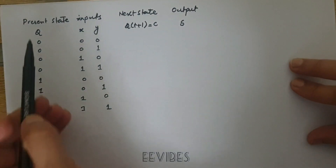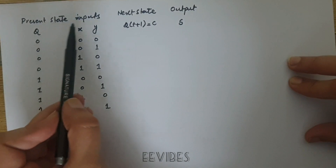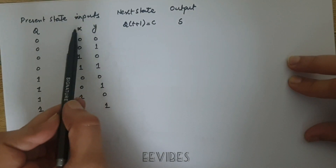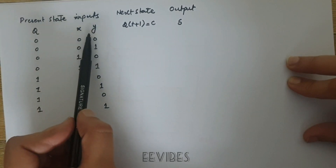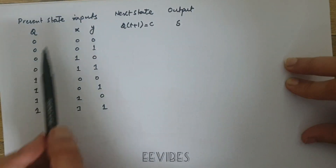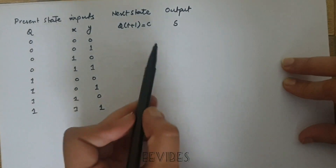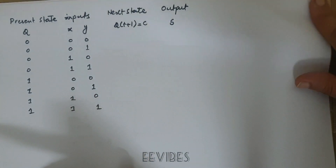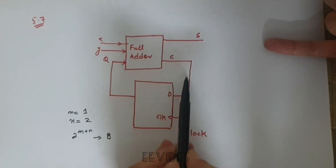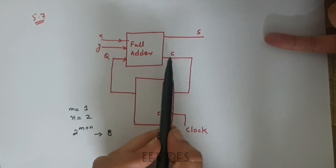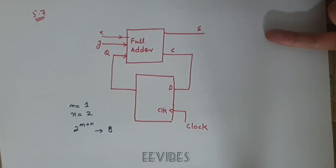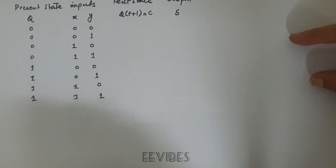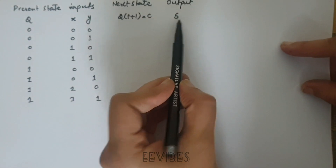The present state is Q of the flip-flop, and there are two inputs x and y. From the flip-flop output and the inputs, we have written 8 possible combinations of binary numbers. The next state in the circuit is actually the carry out of the full adder — whatever the C-out value is will determine the next state of the flip-flop.